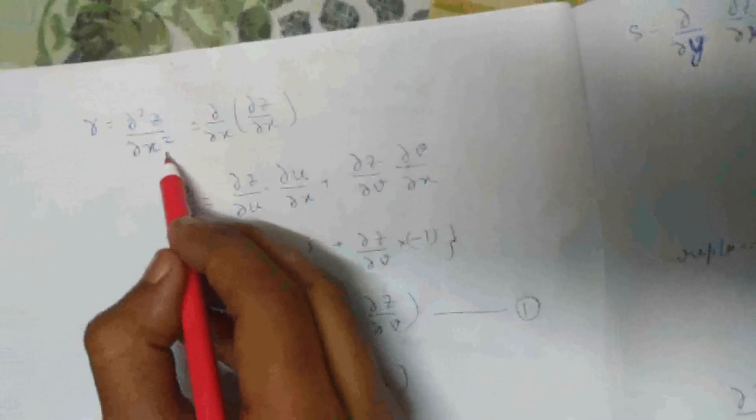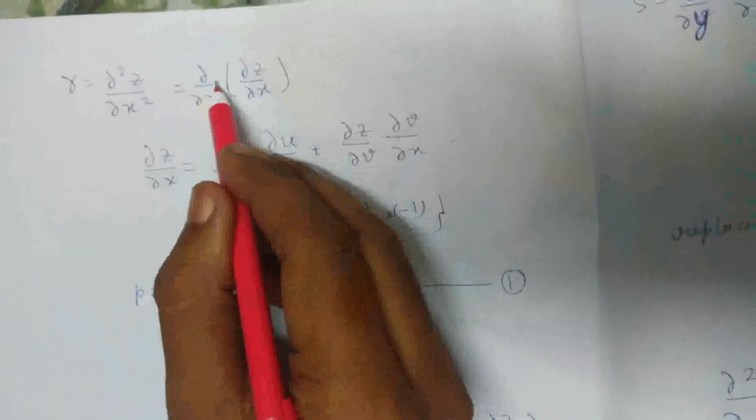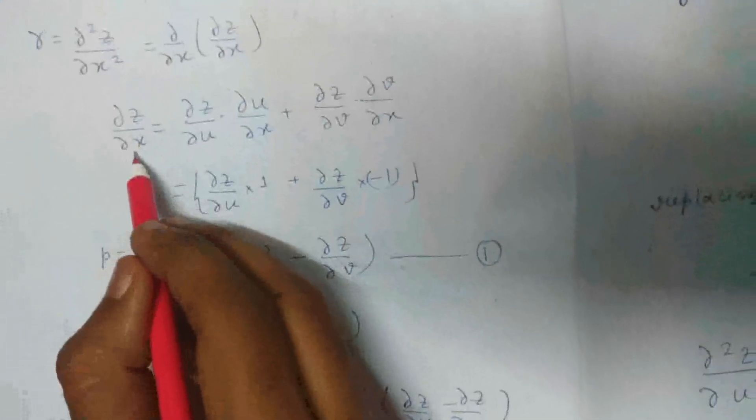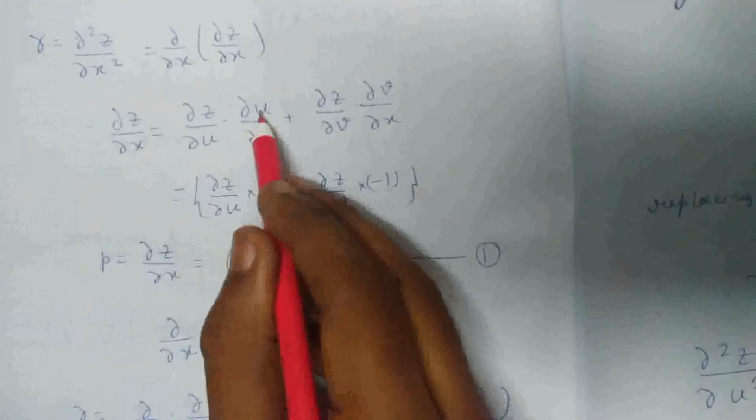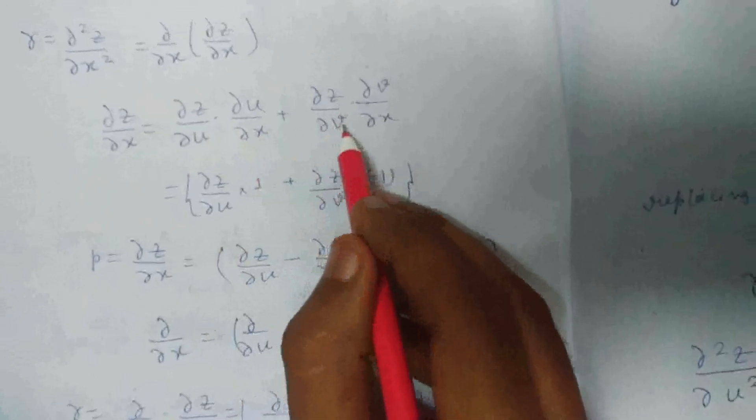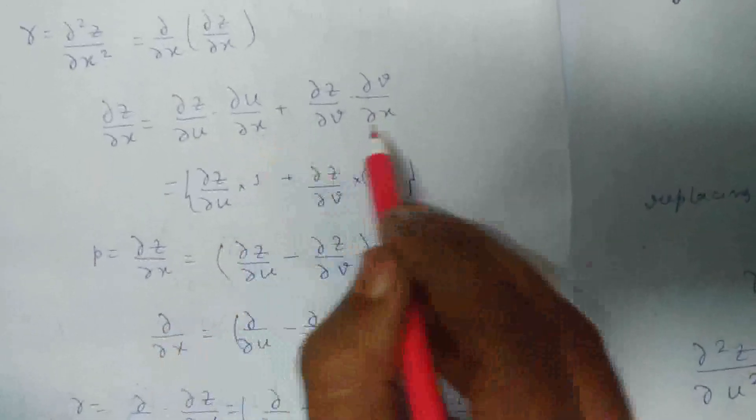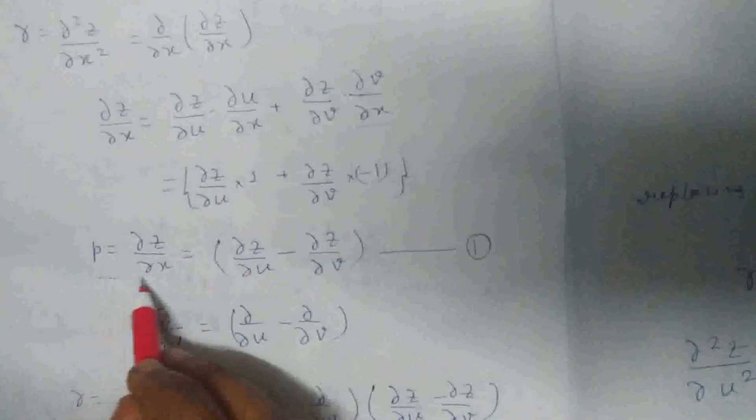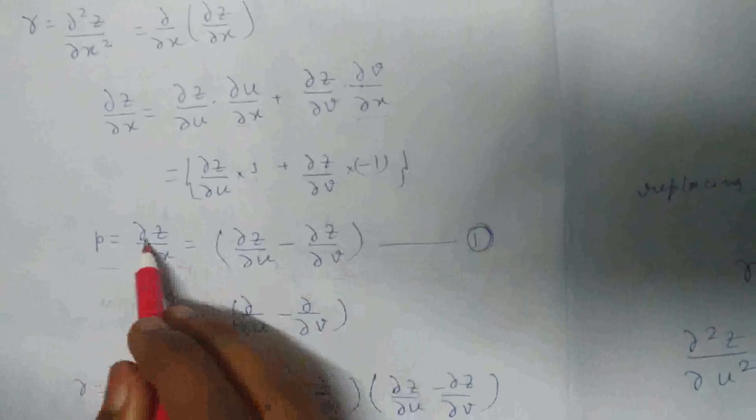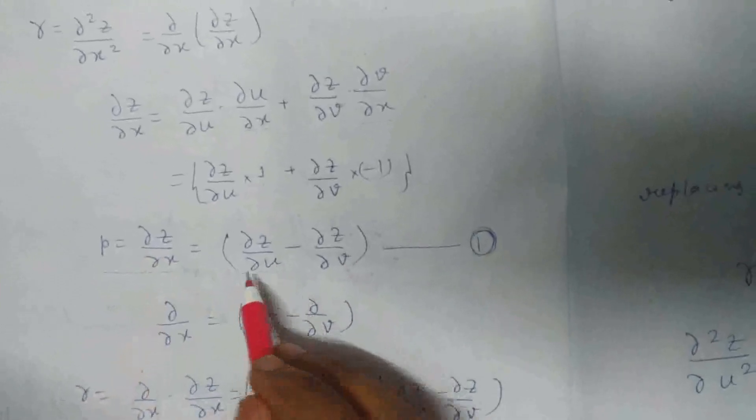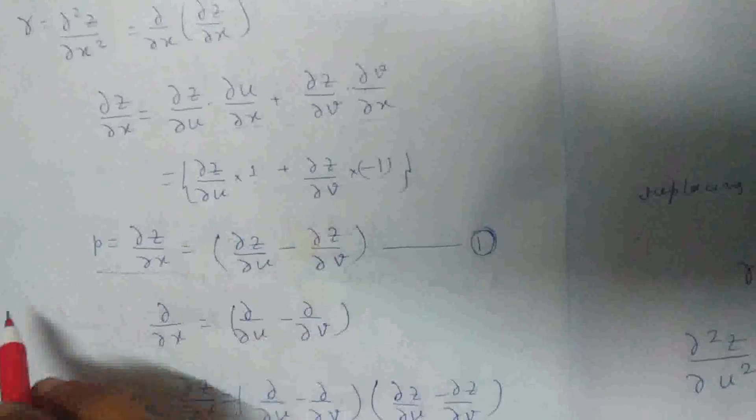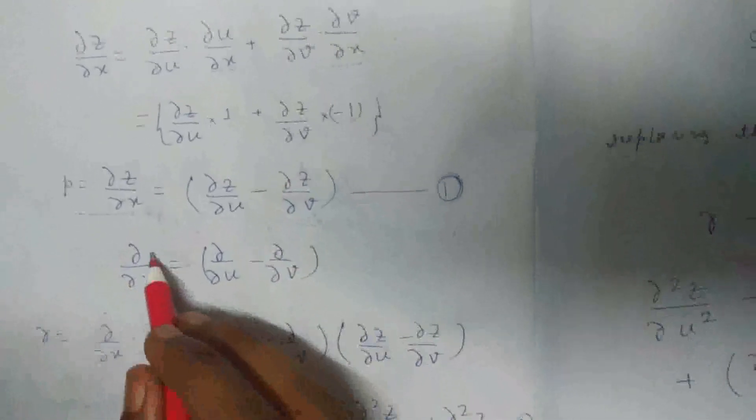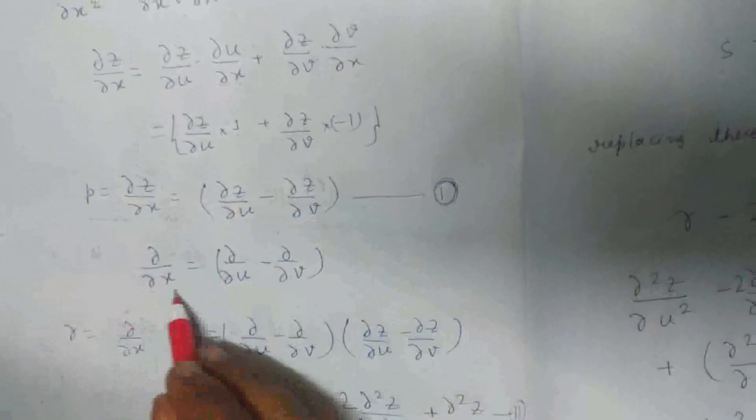As I've already mentioned, R is d²z/dx², which equals d/dx of dz/dx. We find dz/dx, which is nothing but dz/du times du/dx plus dz/dv times dv/dx. We've already found values for these two equations and we're going to put this here. We find the value of p and name it equation one. We find the value of operator by eliminating z from both sides.